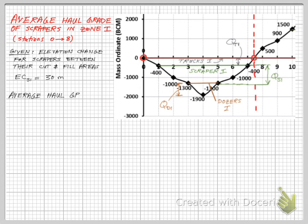We will apply this formula to calculate the average grade by dividing EC over AHD values for the scrapers. By doing this simple calculation we find that the scrapers will have an average haul grade of 6.9 percent.